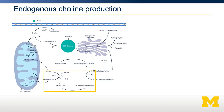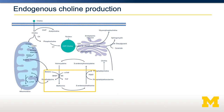Another role of choline is through its conversion from betaine into S-adenosylmethionine. In this case, it can act as a methyl donor. This is important for development, as methyl donors are important for many different developmental processes. A third role of choline is as phosphatidylcholine, which is a really important phospholipid, especially for delivery of lipoprotein particles.